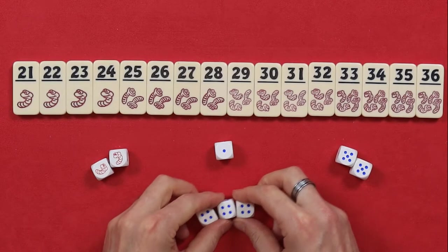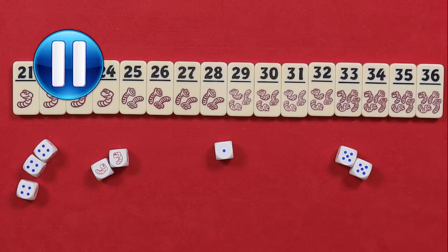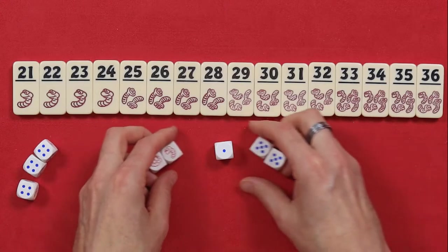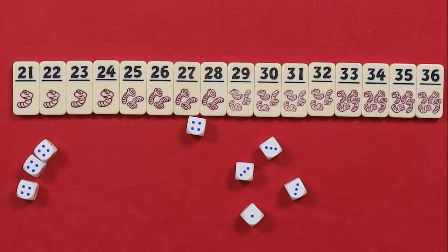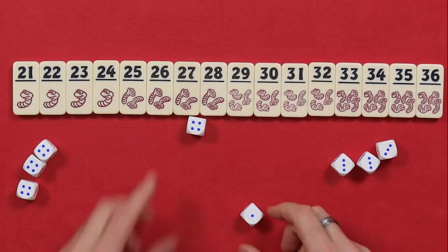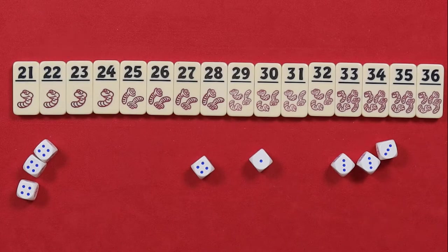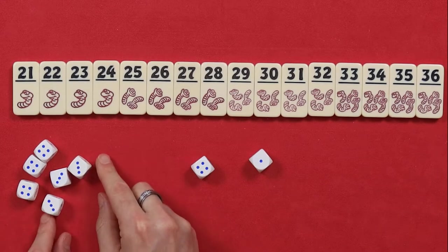Set the dice you have chosen off to the side. Now, take the remaining dice and roll again. Do the same thing as your first roll by sorting them by numbers or worms.